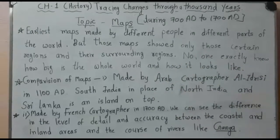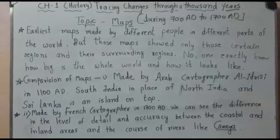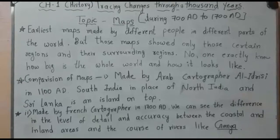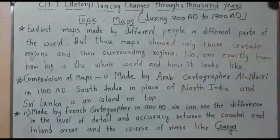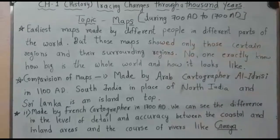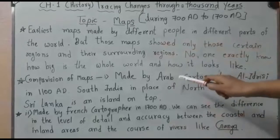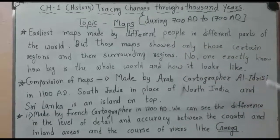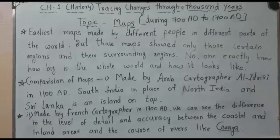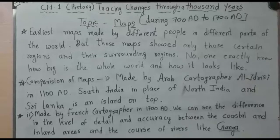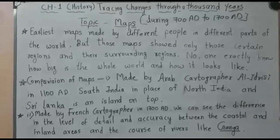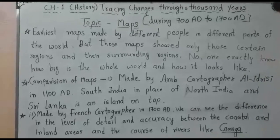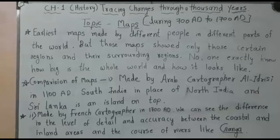For comparison, let's look at maps made by different countries and different people. The first map we compare is made by Arab cartographer Al Idrissi. Al Idrissi was an Arabic cartographer who made his first map in 1180 AD.